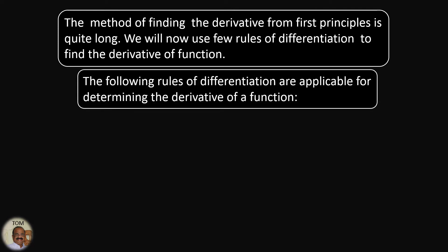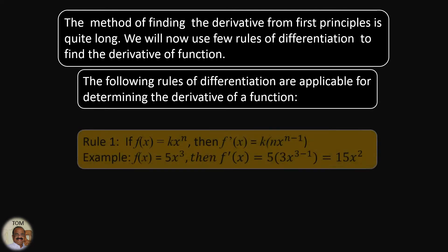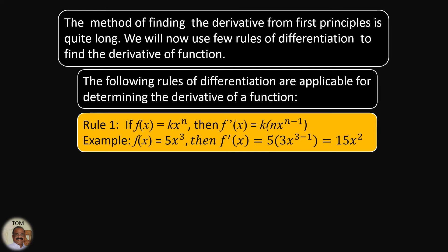Rule number 1: If f(x) = kxⁿ, where k is a constant coefficient of xⁿ, look at the exponent n — that is the most important thing. Then f'(x) = k times n times x to the power n minus 1. We subtract 1 from the exponent.